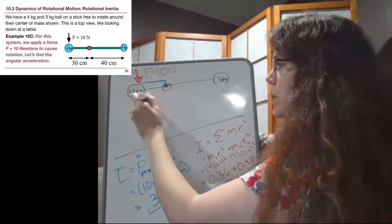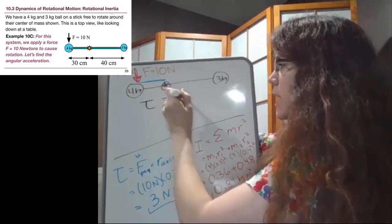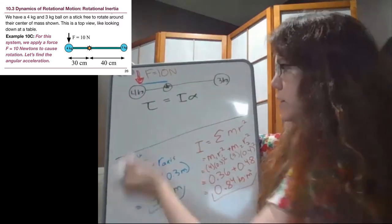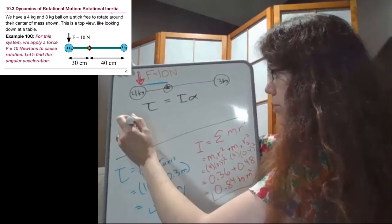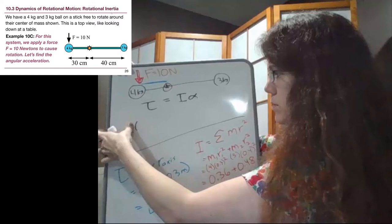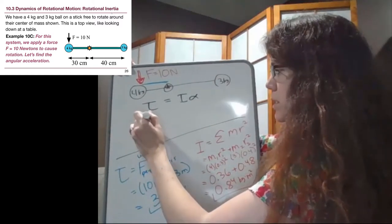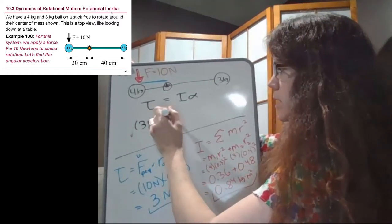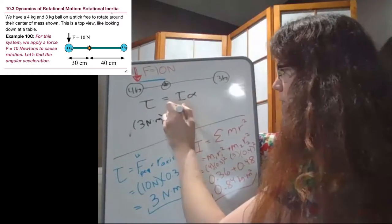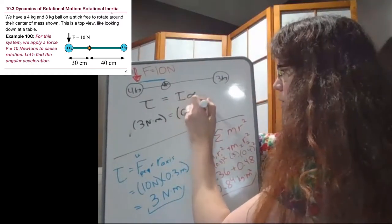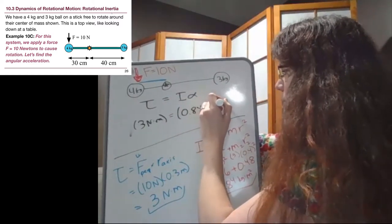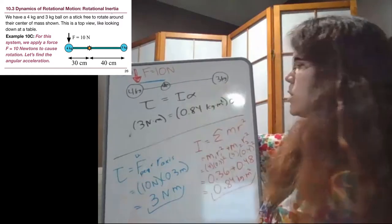So if torque equals I alpha, then the torque is 3, 3 newton meters. The moment of inertia is 0.84 kilograms times meters squared, and then we're looking for alpha.